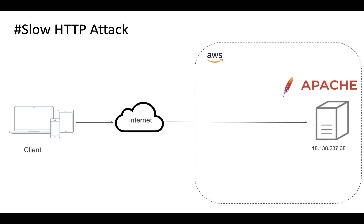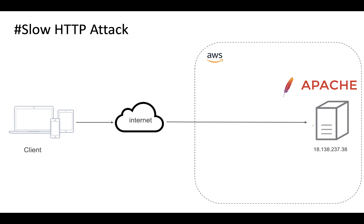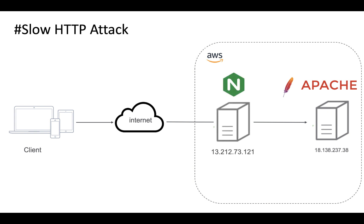In the second demo I want to show the security benefit of a reverse proxy. I'll initiate a slow HTTP request directly to the backend server first — the expected result is that once the slow HTTP request is initiated, the server resources will be exhausted and it won't be able to serve other legitimate HTTP requests. Then I'll initiate the same slow HTTP request through nginx and see how the backend server behaves.